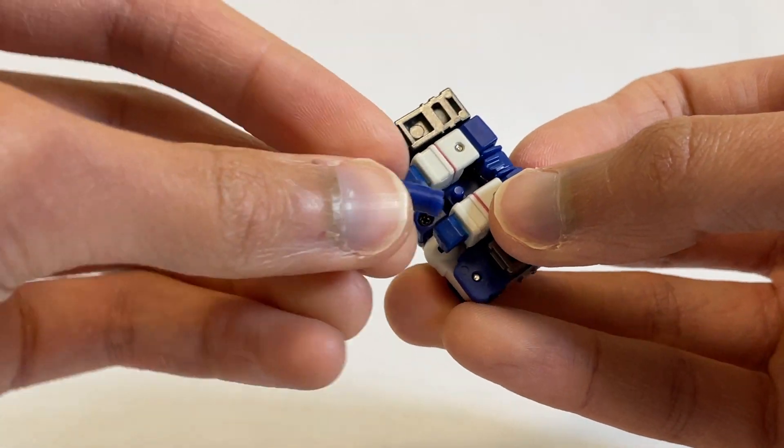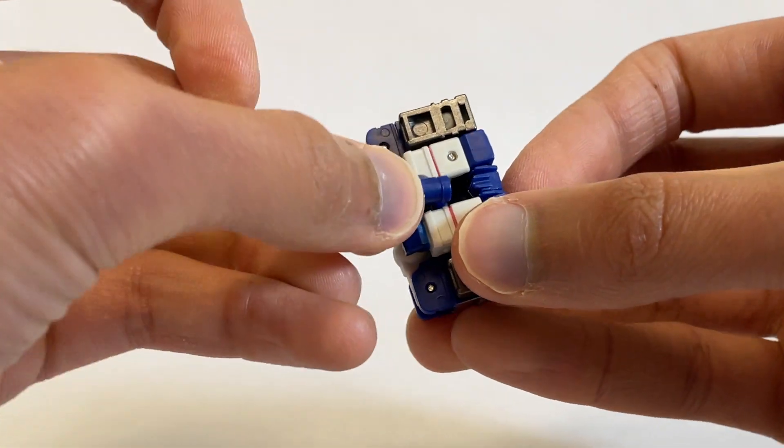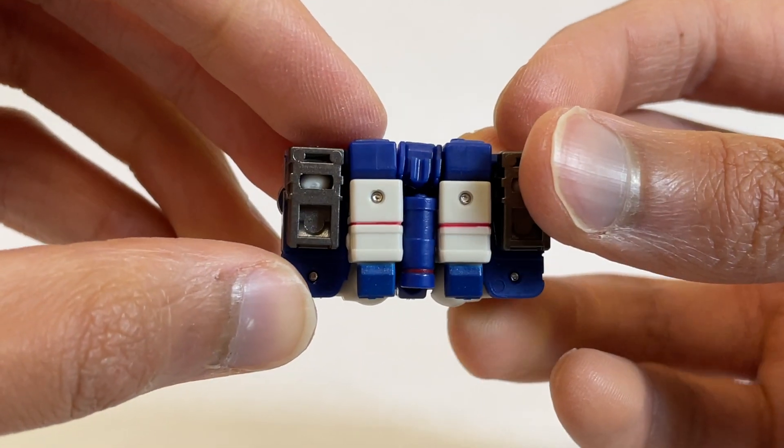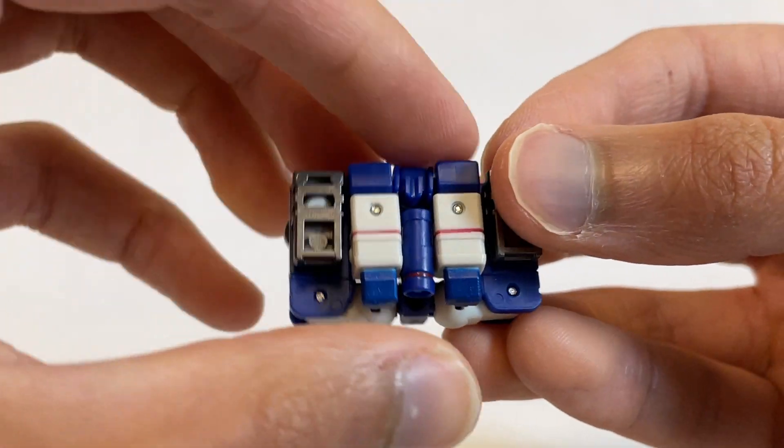And then last but not least, we want to take his shoulder cannon and peg it into the back there. There's just a little peg underneath the head. And it holds perfectly in the center.